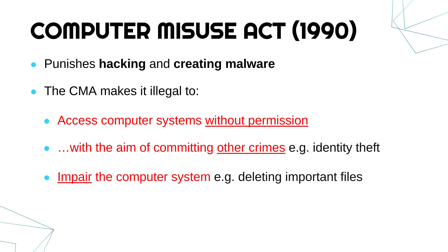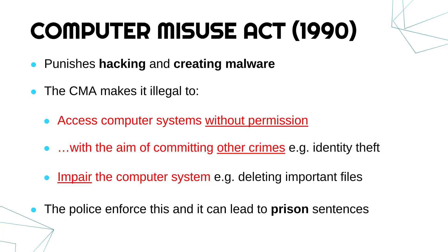The form which covers malware most specifically is impairing the computer system. If you are impairing something, you are causing it to not work as well as it should — it might not even work at all. Often malware does this: it might really slow down the computer, or a virus might delete important files causing the computer to not work properly. This law makes that illegal. The police are in charge of enforcing this law and it can lead to prison sentences.